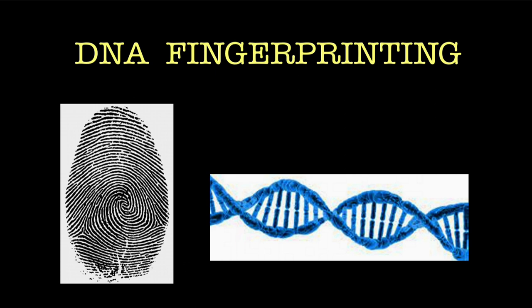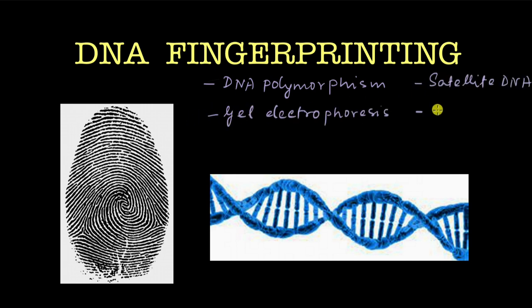DNA fingerprinting can be used not only to identify culprits among suspects, it can also be used to do things like paternity testing. So this video will be about the technique used to obtain DNA fingerprints of a person. But for that, I would recommend you go through these topics first: DNA polymorphism, satellite DNA, gel electrophoresis, and southern blot. You can go back to our course and take a look at the videos that we have on these topics.